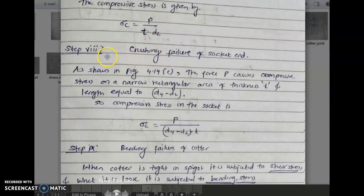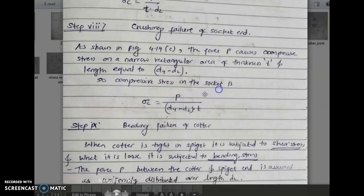Step 8: Crushing failure of socket end. As shown in the figure, the force P causes compressive stress on a narrow rectangular area of thickness t and length equal to (d4 − d2). So the compressive stress in the socket is sigma_c = P / ((d4 − d2) × t).